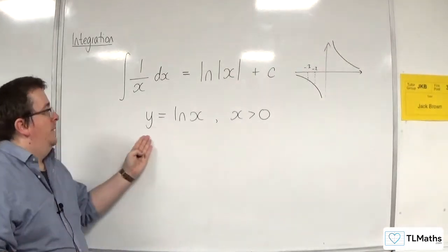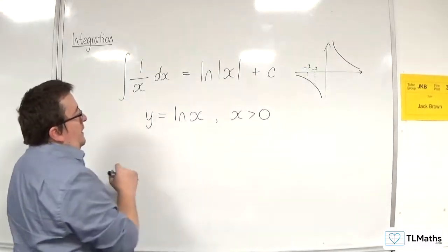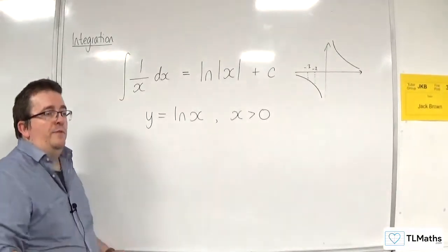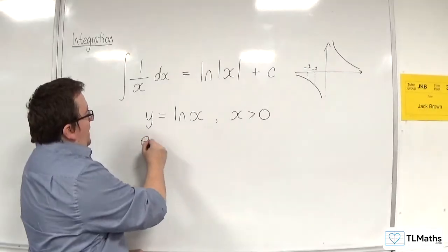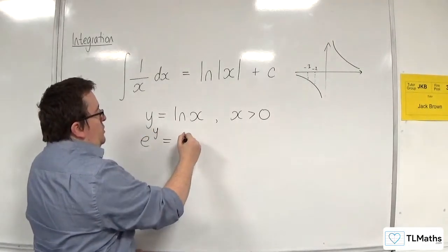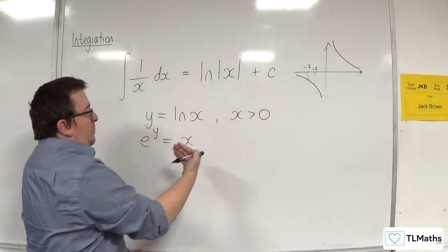Now, how do you differentiate this? Well, what happens is that I need to write this in exponential form first. So I am effectively going to e both sides, and I can write that as e to the y is equal to e to the natural log of x, which is just x. So I go from logarithmic to exponential form.